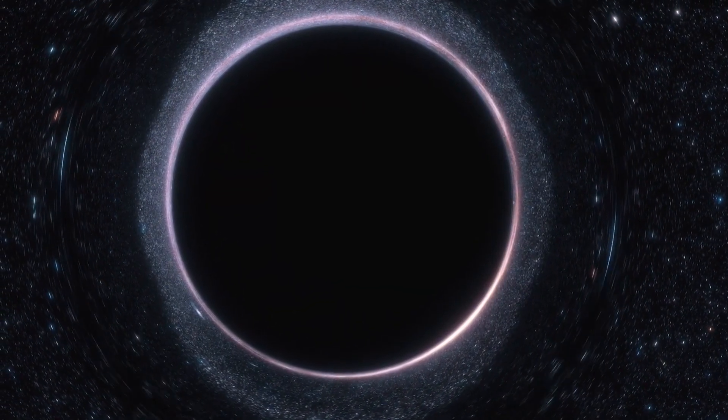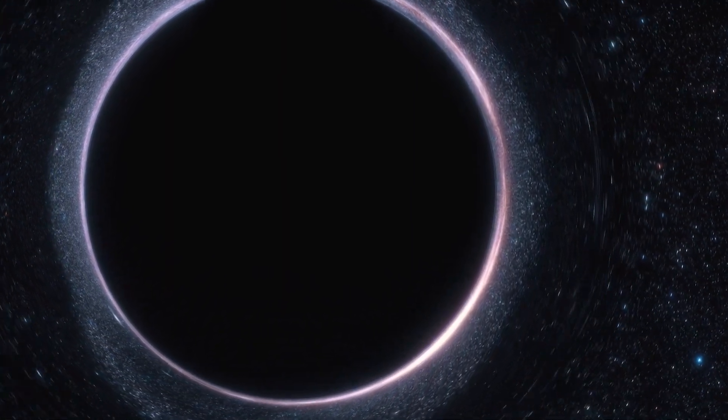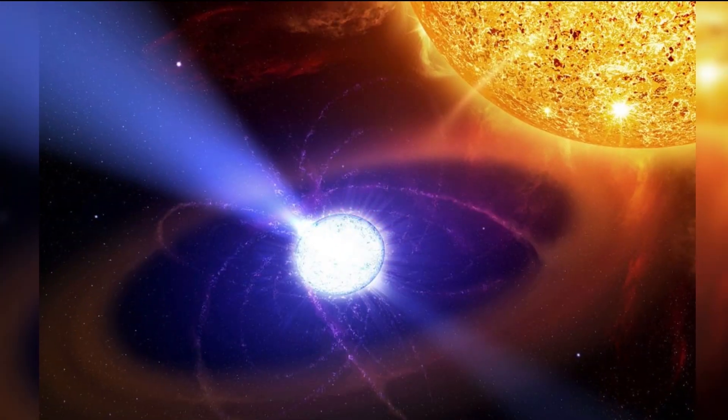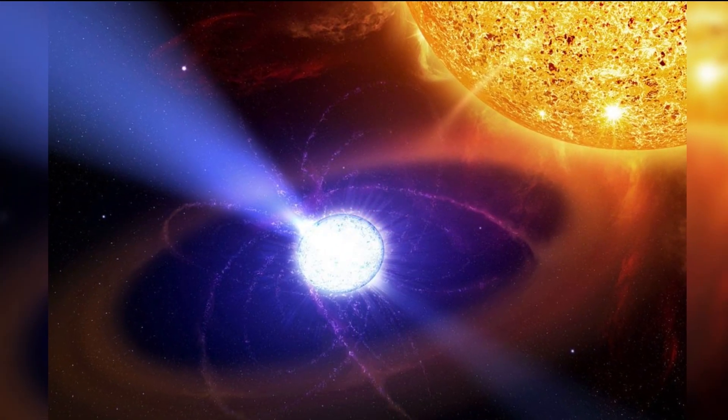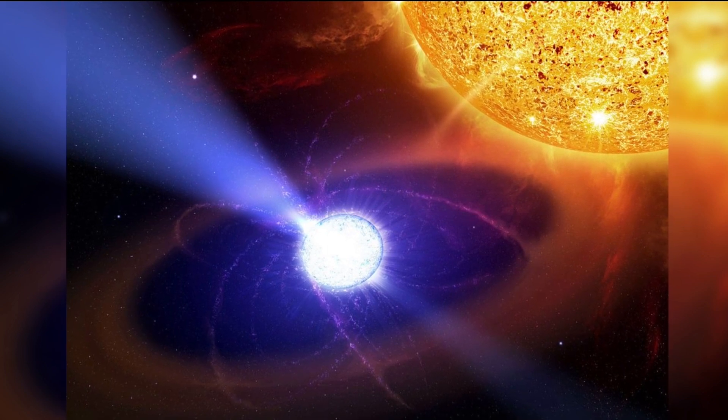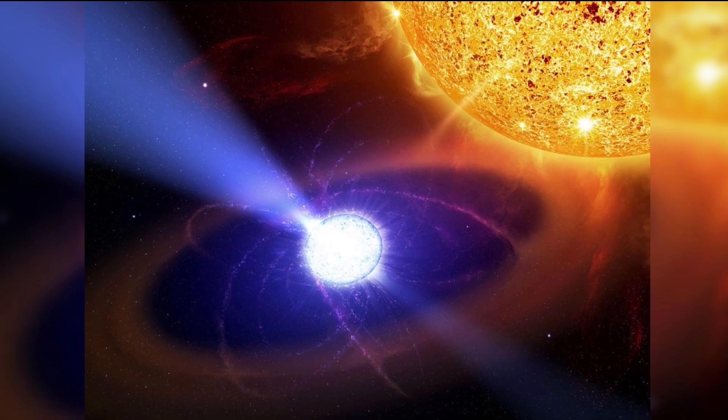Type 1 supernovae lack a hydrogen signature in their light spectra and are generally thought to originate from white dwarf stars in a close binary star system. As the gas of the companion star accumulates into the white dwarf, the white dwarf is progressively compressed and sets off a runaway nuclear reaction inside that eventually leads to a cataclysmic supernova outburst.